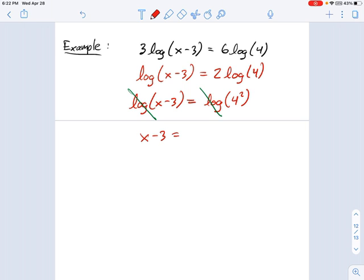x minus 3 equals 4 squared, or in other words, x minus 3 equals 16, and that gives me x equals 19.